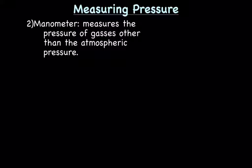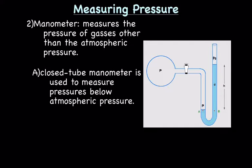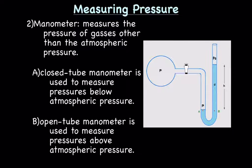Another way to measure pressure is using a manometer. And this measures the pressure of gases other than atmospheric pressure. And there are two types. So here's a quick picture of a manometer. We'll talk about it in just a moment. There are two basic types of manometers. There is a closed tube, which is used to measure pressure below atmospheric pressure. And then there's the open tube manometer, which is used to measure pressure above atmospheric pressure. So now let's kind of talk about how this thing works.